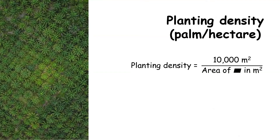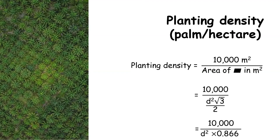Now we return to the calculation of planting density. The planting density is equal to 10,000 square meters divided by the area of a parallelogram. Therefore, the planting density of oil palm can be calculated using the equation: 10,000 divided by (d² × 0.866).